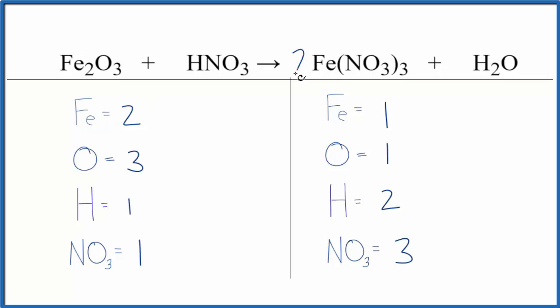Let's put a coefficient of two in front of the iron 3 nitrate. Now we have one times two. That'll give us two. We balance the iron atoms. And then for the nitrates, we have one times three. So we have three times two. We have six nitrate ions here.